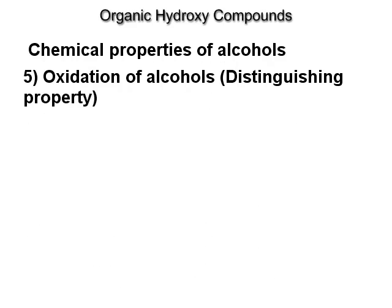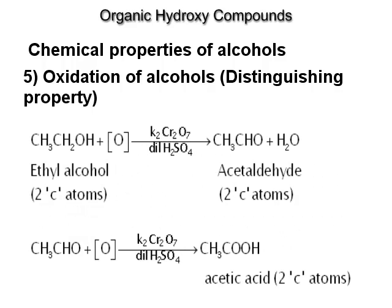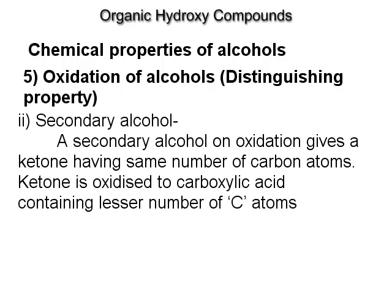Oxidation of alcohols — a distinguishing property. A primary alcohol on oxidation using acidified potassium dichromate first gives an aldehyde, which on further oxidation gives a carboxylic acid. Both the aldehyde and acid formed contain the same number of carbon atoms. A secondary alcohol on oxidation gives a ketone having the same number of carbon atoms. The ketone is further oxidized to carboxylic acid containing a lesser number of carbon atoms.